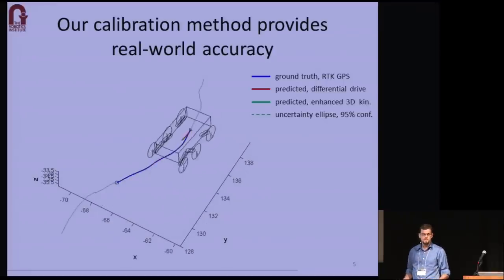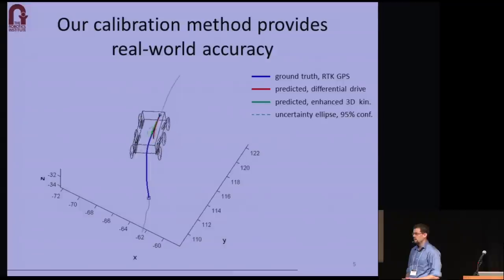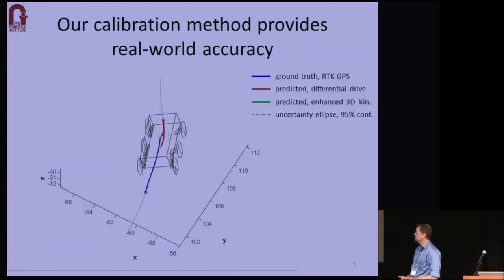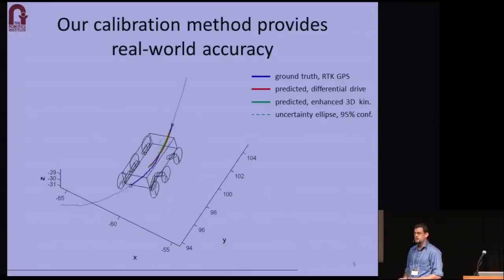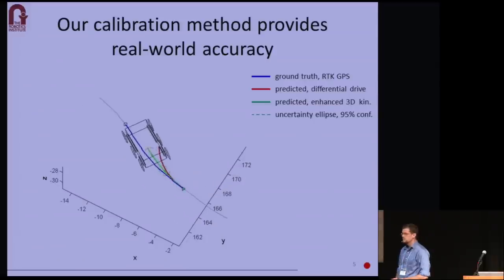Of course, predictions can never be completely accurate because there are sensor noise and random disturbances. But we do calibrate a model of this uncertainty online. And the ellipses represent covariance estimates at one-second intervals.